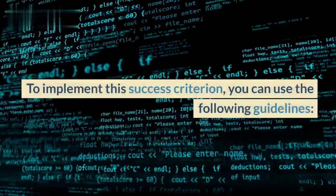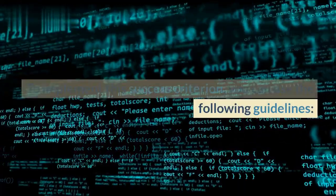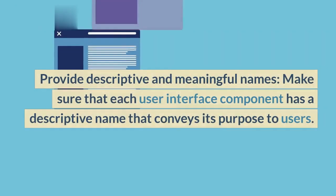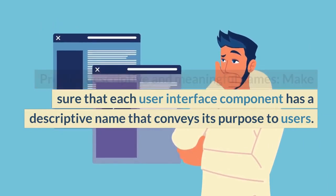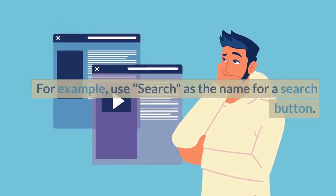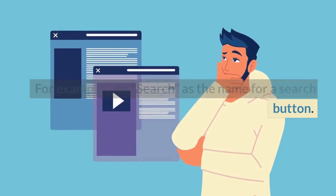To implement this success criterion, you can use the following guidelines. Provide descriptive and meaningful names. Make sure that each user interface component has a descriptive name that conveys its purpose to users. For example, use search as the name for a search button.